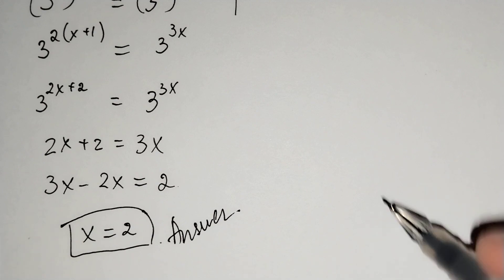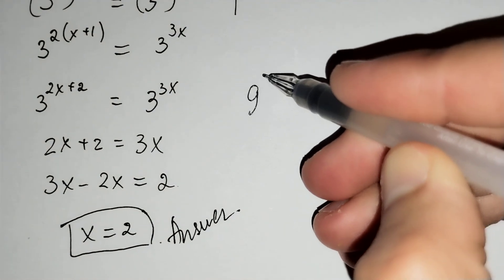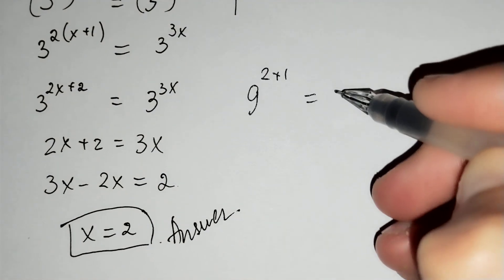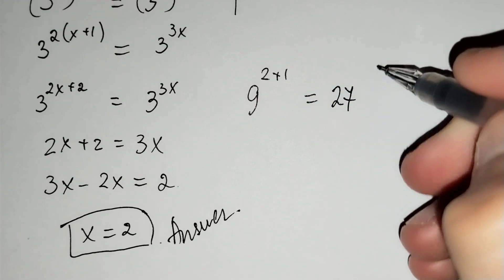Let's check it. 9 to the power of 2 plus 1 should equal 27 to the power of 2.